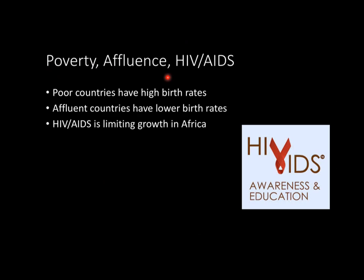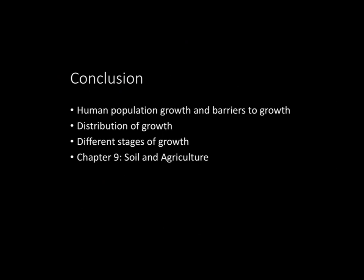To recap: poor countries have high birth rates while affluent countries have lower birth rates. HIV and AIDS are significantly limiting population growth in Africa by cutting into the younger population, even though many children are being born. There are major ongoing efforts to help HIV and AIDS victims in Africa. In summary, Chapter 8 covered human population growth and barriers to growth, the distribution of that growth, and the different stages of population growth. Chapter 9 will cover soil and agriculture.